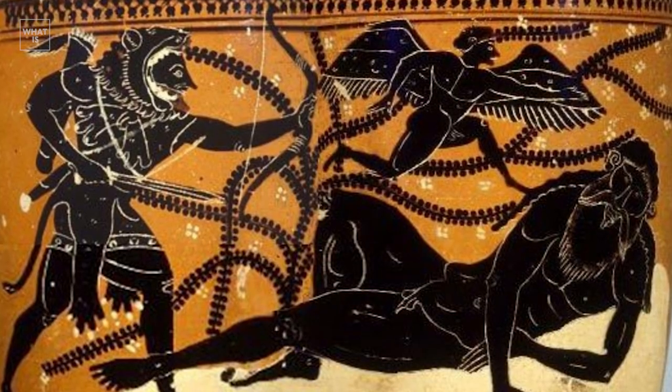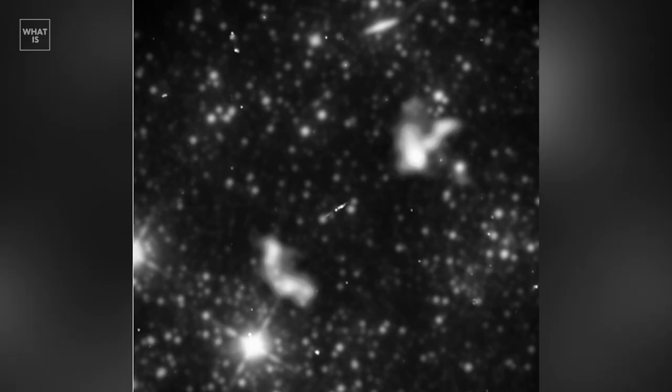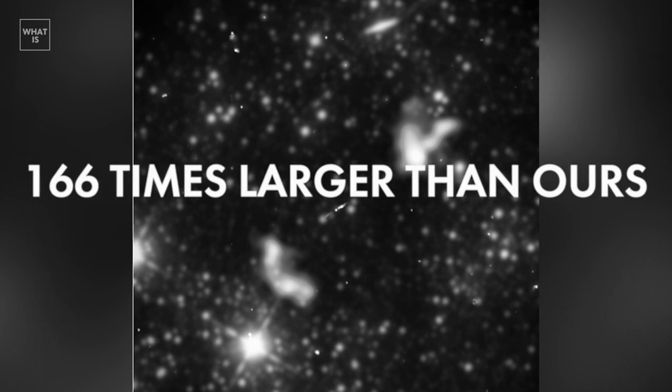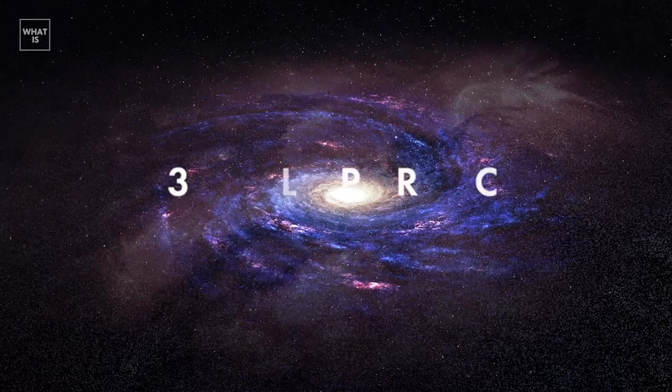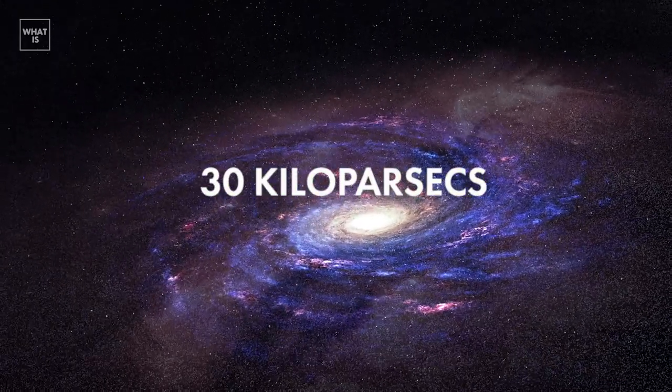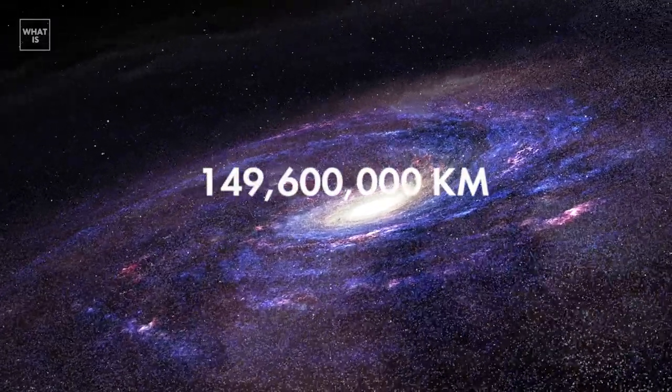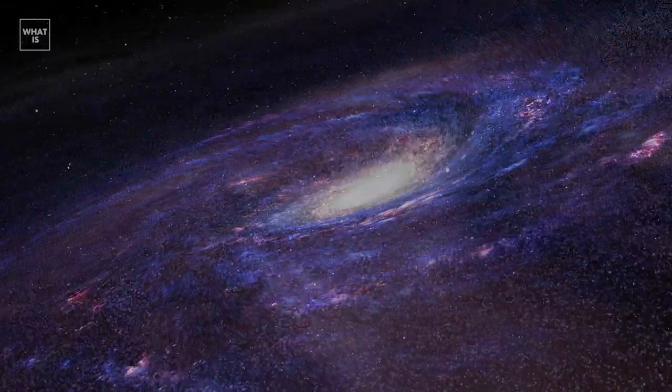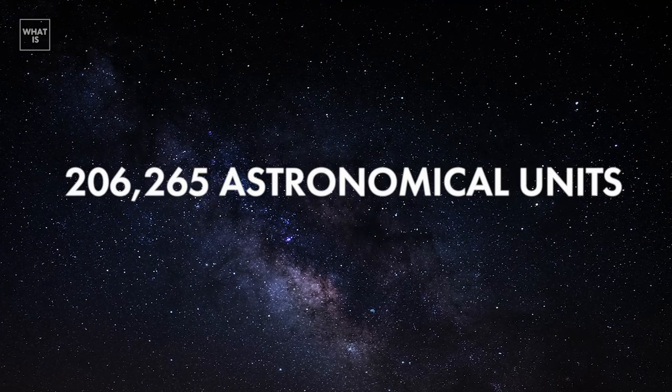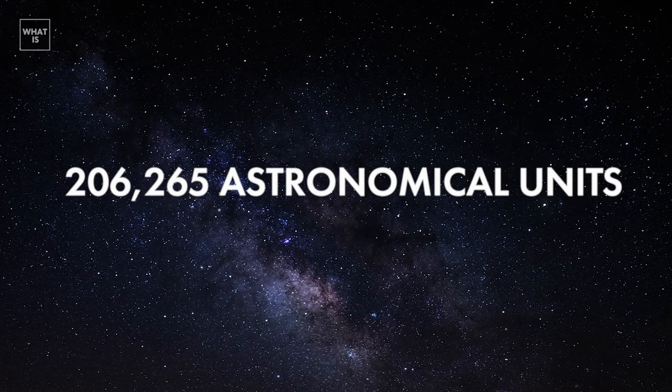The giant radio galaxy, Alcyonisus, is 166 times larger than ours, and the diameter of the Milky Way is 30 kiloparsecs. One astronomical unit is equal to 149,600 million kilometers, which is 206,265 astronomical units.